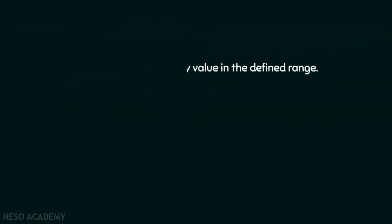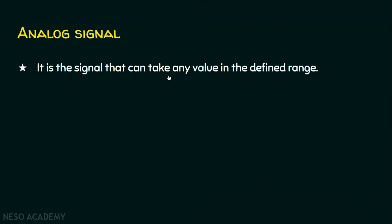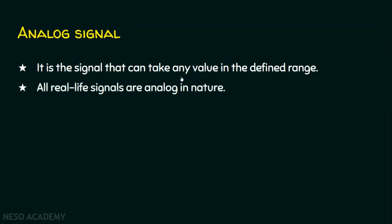An analog signal is the signal that can take any value in the defined range — please note, any value. For example, all real life signals are analog in nature: the colors we see, the heat or temperature we feel, the sounds we produce or hear — all these signals are analog in nature.